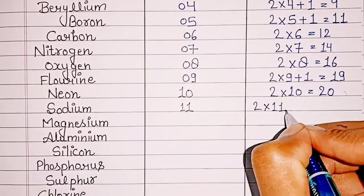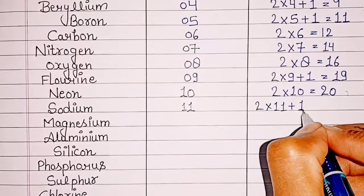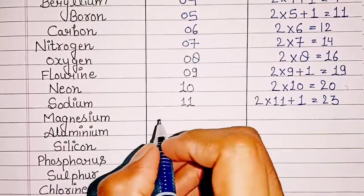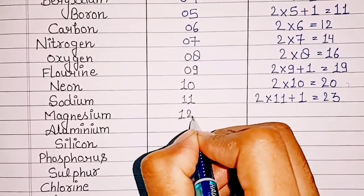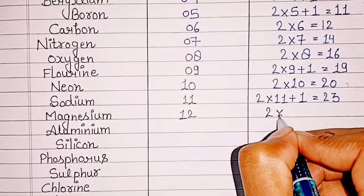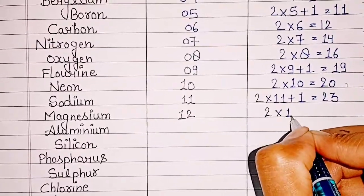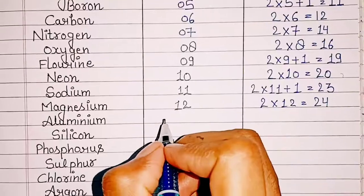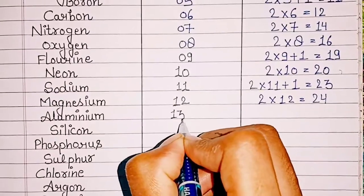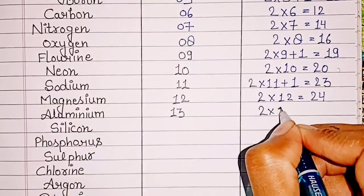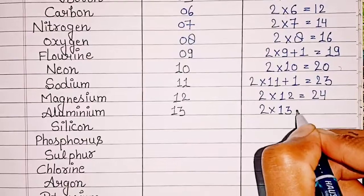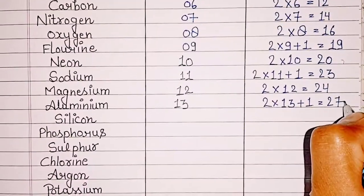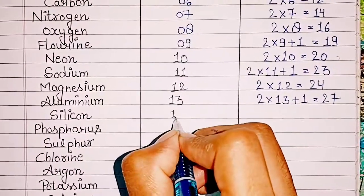Sodium: atomic number 11, mass number 2 x 11 + 1 = 23. Magnesium: atomic number 12, mass number 2 x 12 = 24. Aluminium: atomic number 13, mass number 2 x 13 + 1 = 27. Silicon: atomic number 14.